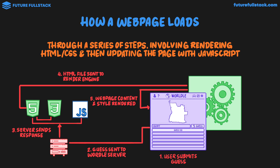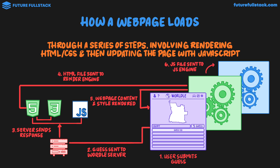What then happens is the JavaScript file is sent to the JavaScript engine, which is built into the browser. The JavaScript engine executes the JavaScript code, which modifies the web page content — displaying the guess as well as how far it was from the correct country, its direction, and percent correct. The JavaScript engine then provides instructions to the render engine, where the HTML and CSS is updated to show the results of the guess. The final step is the web page is updated — the render engine renders the final page in the browser.